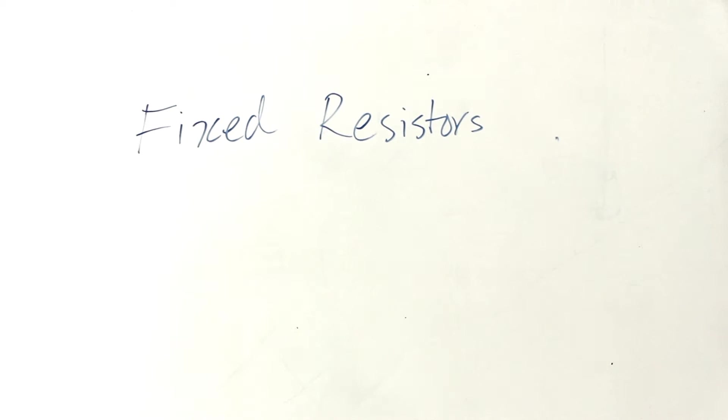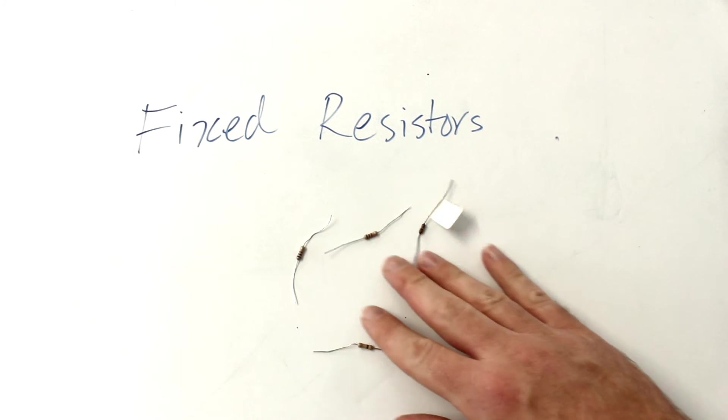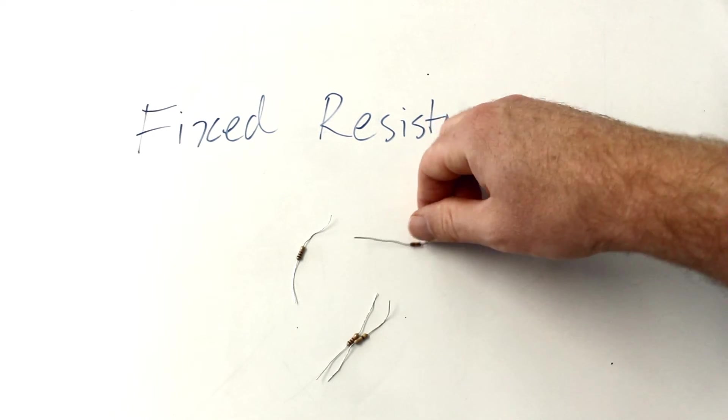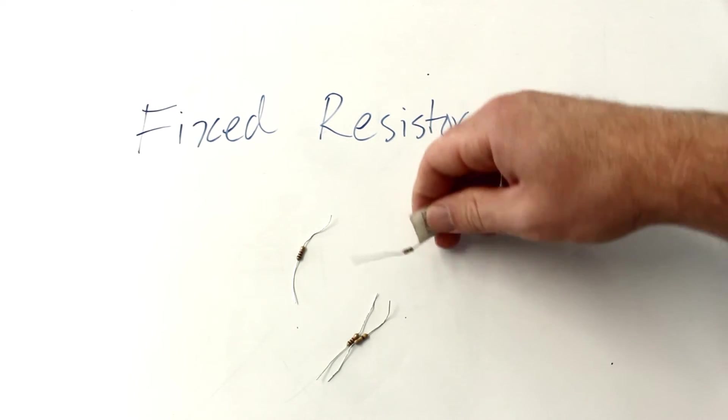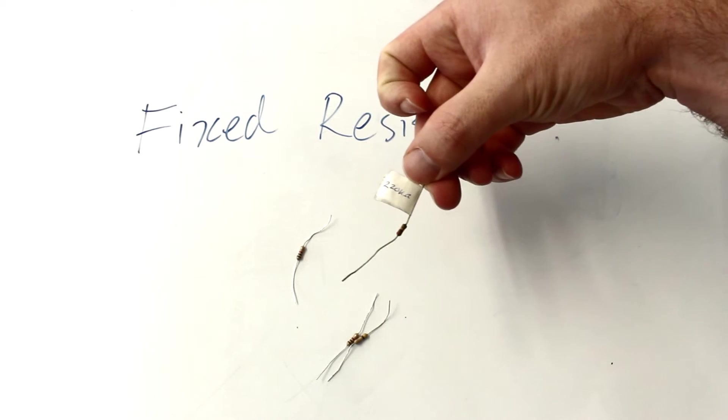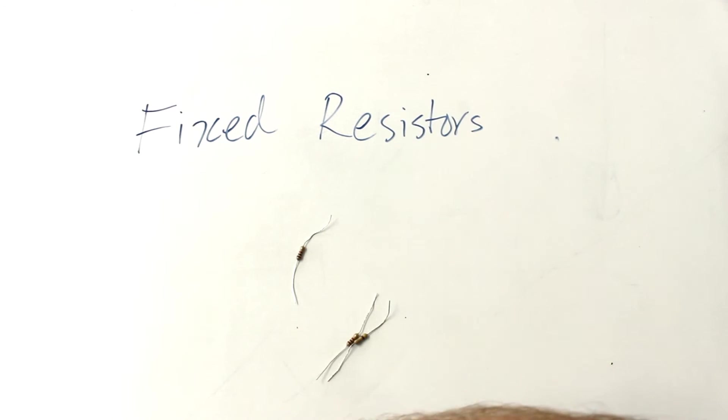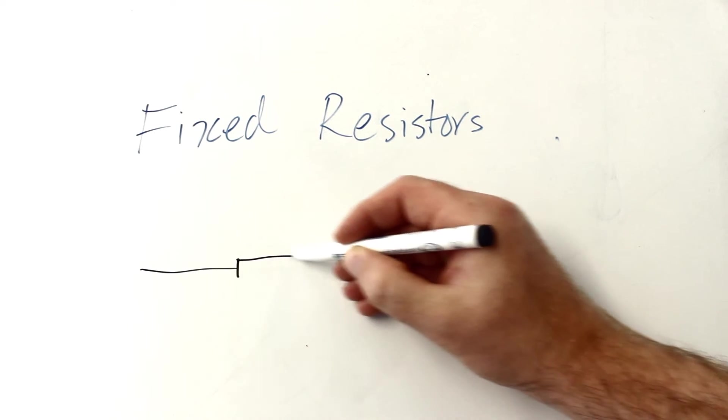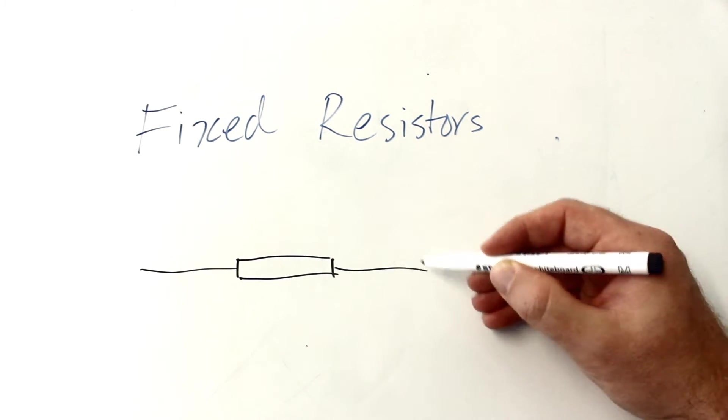These are fixed resistors. In other words, their resistance doesn't change. They come in all different shapes and sizes. There's little colors on them that help you to match them up so you know which one's which. This one's been labelled here. This is a 220 kilo-ohm resistor. We draw them just like this. With the ruler.